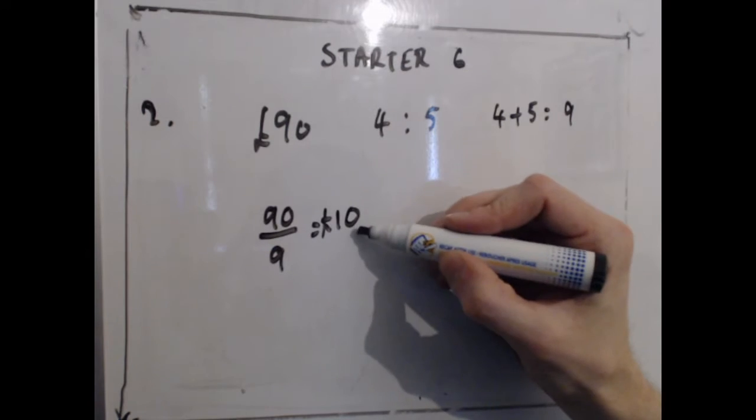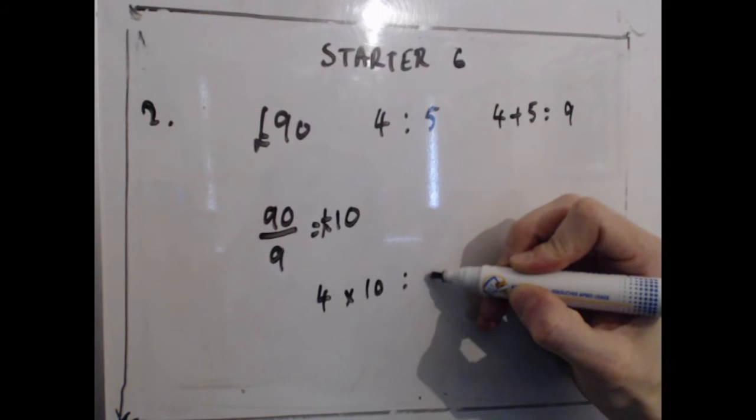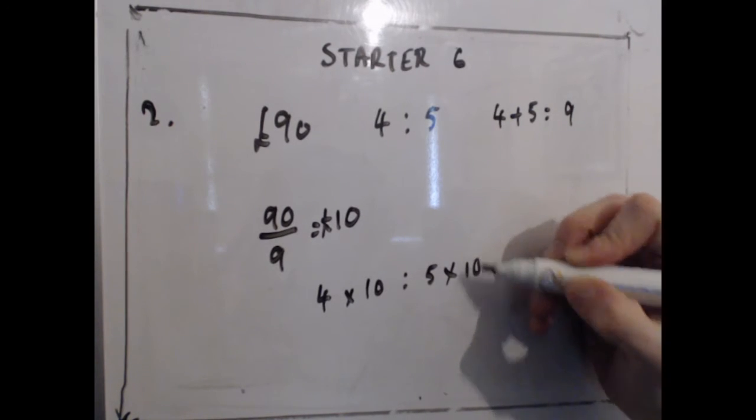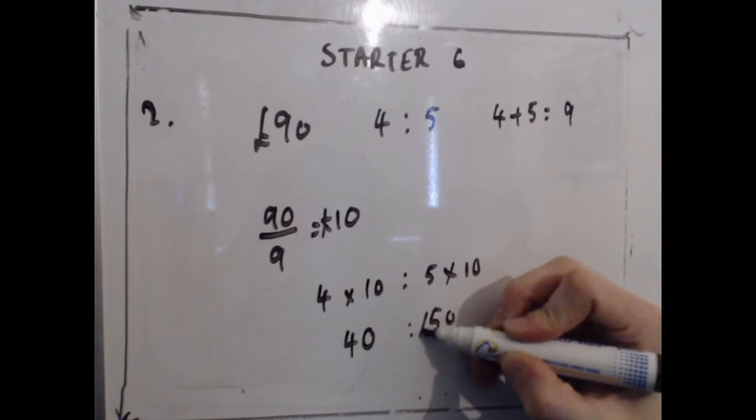Once I know that each one part is worth £10, just multiply by 10 for both ratio parts, and you will have the correct amounts. So that will be £40 to £50.